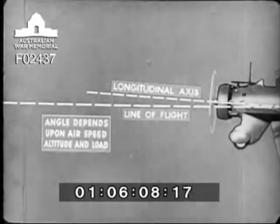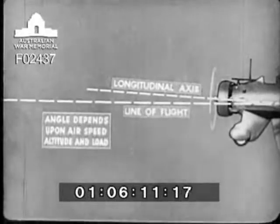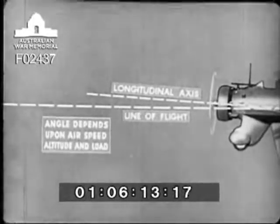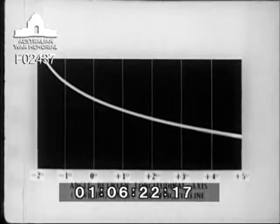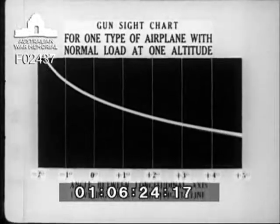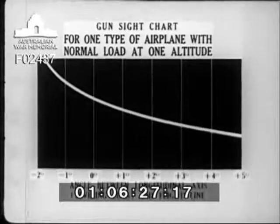The longitudinal axis of the airplane is a fixed line marked by the leveling lugs installed in the fuselage. The flight line varies with reference to the longitudinal axis — it depends on the speed, the altitude, and the load. The correct angle between the flight line and the leveling lugs for any airplane equipped with fixed machine guns may be obtained from the gun sight chart prepared by the manufacturer and included in the airplane handbook.